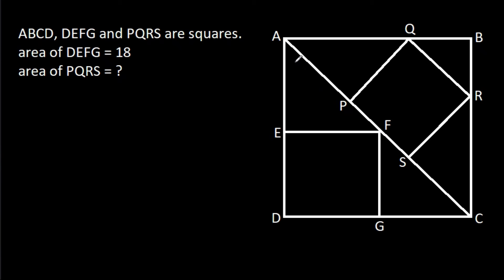In this video, we have been given that ABCDEFG and PQRS are squares and the area of DEFG is 18. We have to find the area of PQRS.